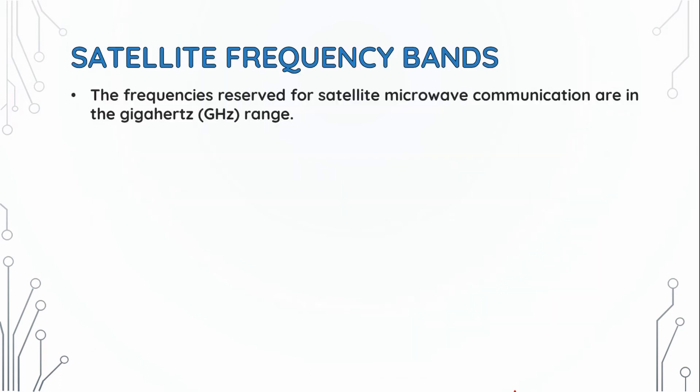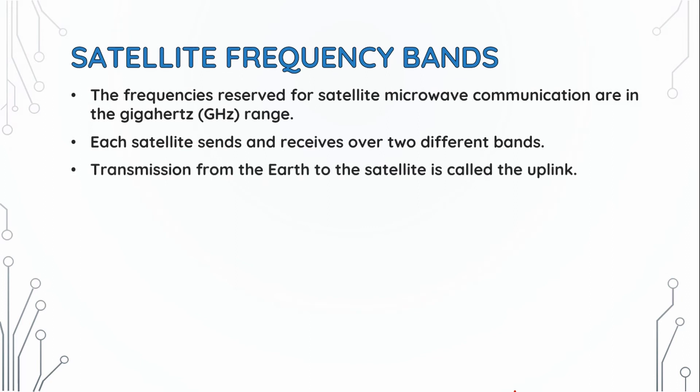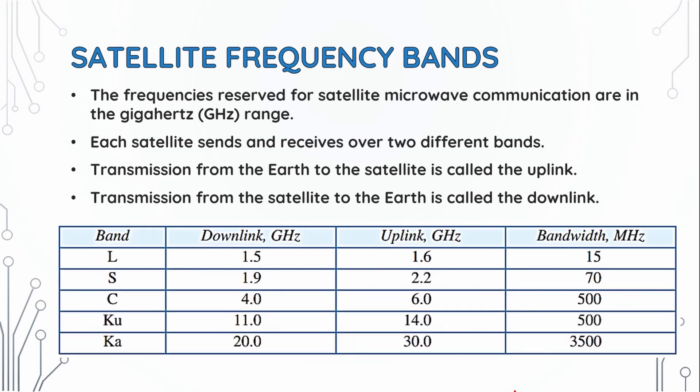Satellite frequency bands. The frequencies reserved for satellite microwave communication are in the gigahertz range. Each satellite sends and receives over two different bands. Transmission from the earth to the satellite is called the uplink, and from satellite to earth is called the downlink. L band: downlink is 1.5 GHz, uplink is 1.6 GHz, and bandwidth is 15 to 70 MHz.